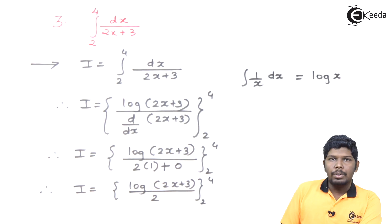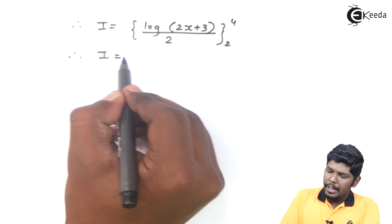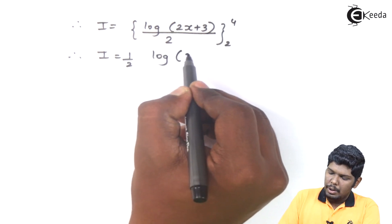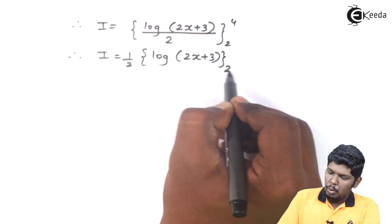Therefore, I will be log of 2x plus 3 upon 2, within limits 2 to 4. Now, you can take this constant 2 outside the bracket that will give you 1 by 2. Therefore, I is equal to 1 by 2, we have log of 2x plus 3, within limits 2 to 4.